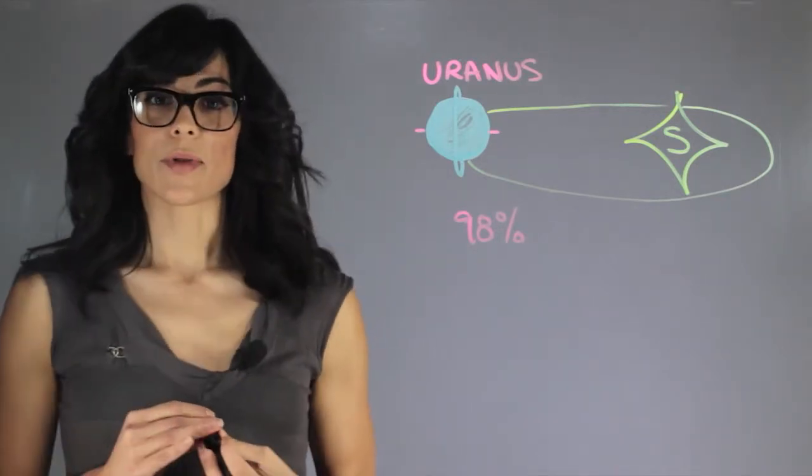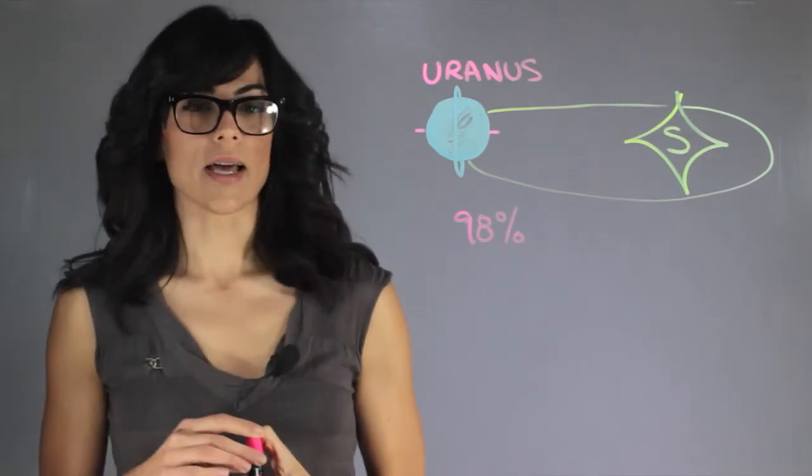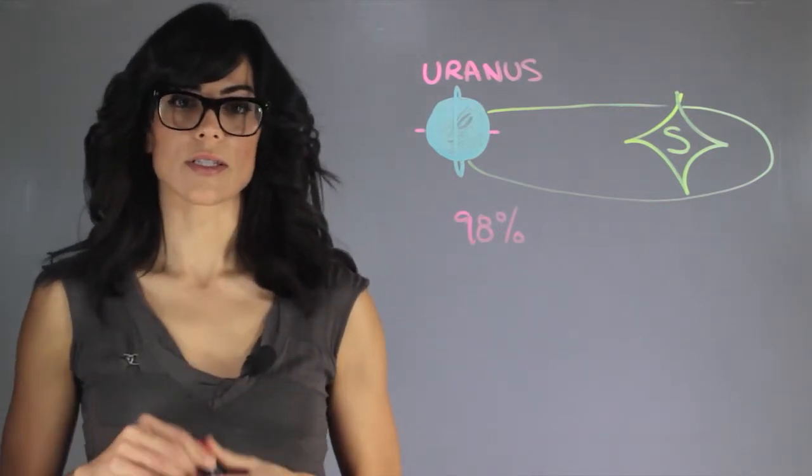My name is Eylene Pirez and I'm an astrophysicist, and Uranus is the planet that rotates vertically instead of horizontally.